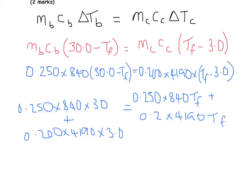So this right hand side here is going to become T_f times, in brackets, 0.250 times 840 plus 0.2 times 4190. I've just factorized the T_f out of both sides there. And so I divide across by that.